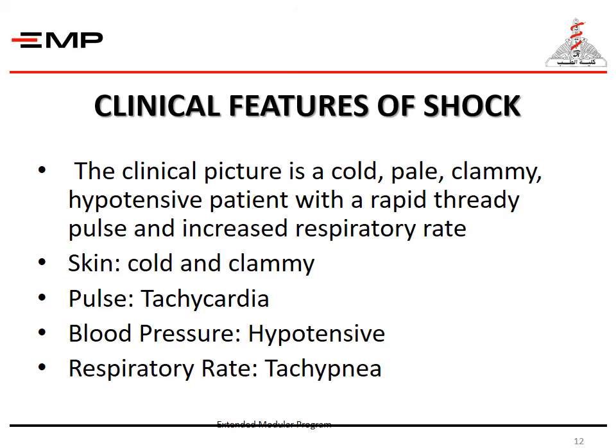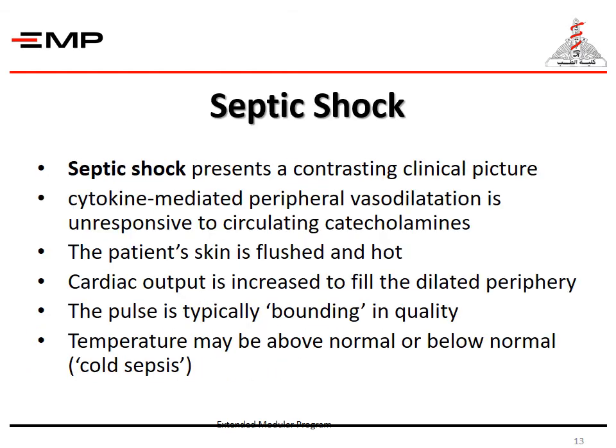The clinical picture is a cold, pale, clammy, hypotensive patient with a rapid thready pulse and increased respiratory rate. The skin is cold and clammy, with tachycardia and increased heart rate, hypotension due to reduced blood pressure, and when we check the respiration of the patient, they have tachypnea — increased respiratory rate.